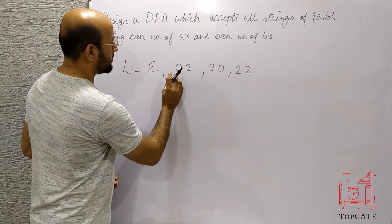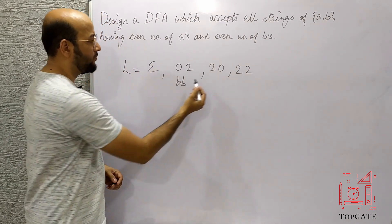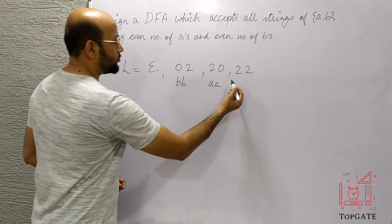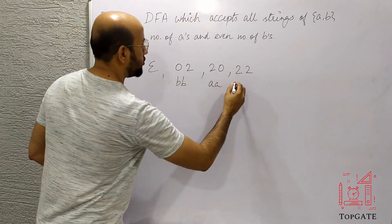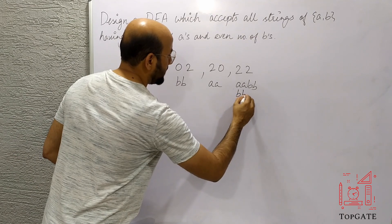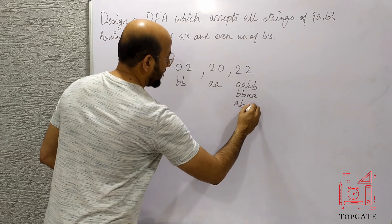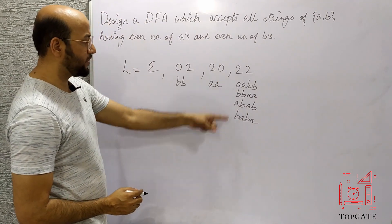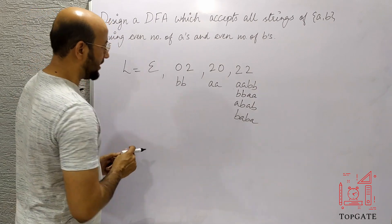With number of A's as 0 and number of B's as 2, we get the string BB. With number of A's as 2 and number of B's as 0, we get AA. With number of A's as 2 and number of B's as 2, we get AABB. We also have to accept BBAA, which also has 2 B's and 2 A's, as well as ABAB and BABA. So all these strings we have to accept, and keeping all of them in mind, we will design a DFA.